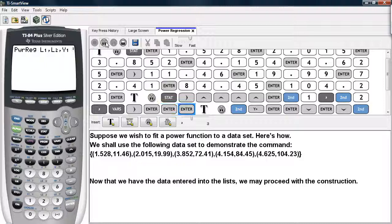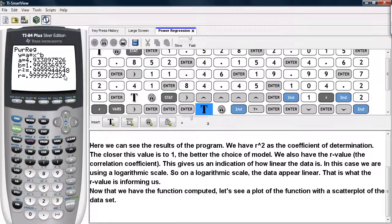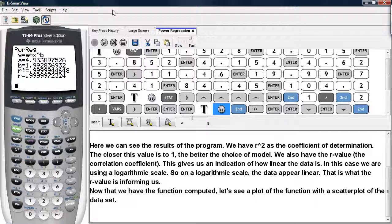We'll go ahead and execute this command and here we have the results. In this particular case we have R squared as the coefficient of determination. The closer this value is to one, the better the choice of model. We also have the R value which is the correlation coefficient. This gives us an indication of how linear the data is. In this case, we are using a logarithmic scale.